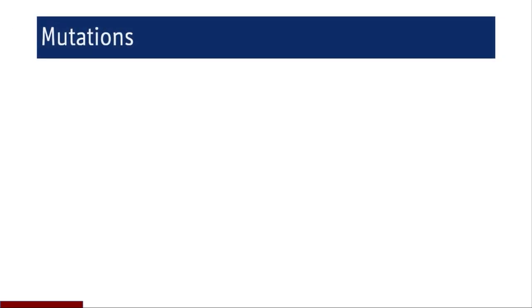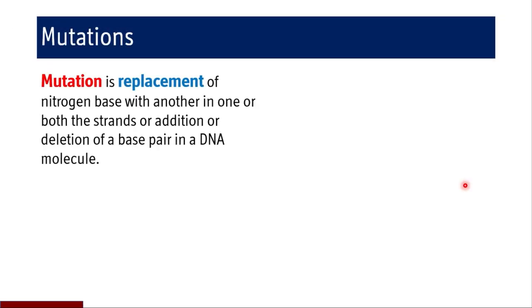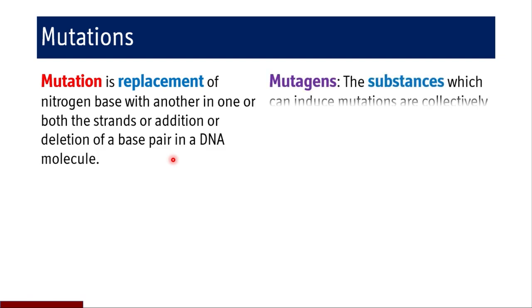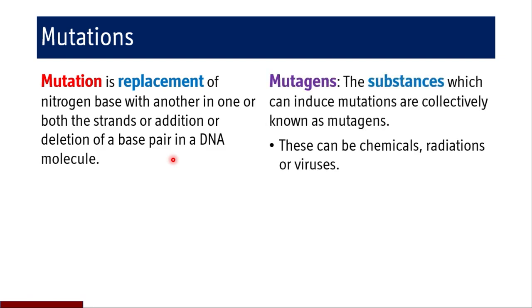A mutation is a replacement of a nitrogen base with another in one or both strands, or addition or deletion of a base pair in a DNA molecule. It results in a change in the sequence of nucleotides — the codon will be mutated and a different amino acid may be produced, or it may result in a termination codon and translation will stop.